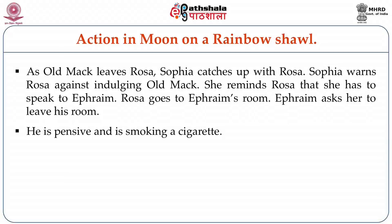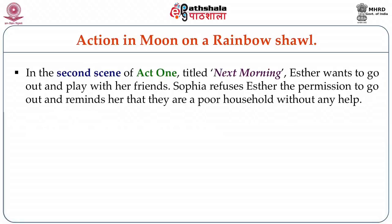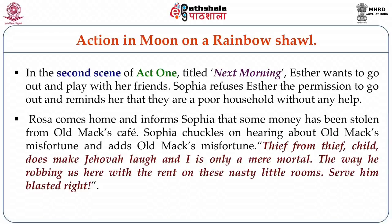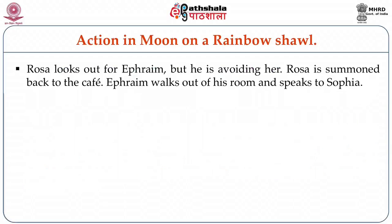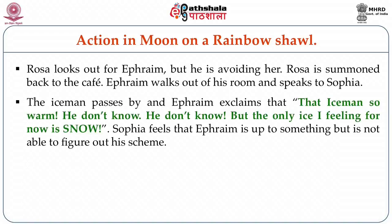In the second scene of Act 1, titled Next Morning, Esther wants to go out and play with her friends. Sophia refuses Esther permission to go out, reminding her they are a poor household without any help. Rosa comes home and informs Sophia that some money has been stolen from Old Mac's café. Sophia chuckles at Old Mac's misfortune and adds, 'Thief from thief — child does not make Jehovah laugh and I is the only mere mortal. The way he is robbing us here with the rent on these nasty little rooms, serve him blasted right.' Rosa looks out for Ephraim but he is avoiding her. Rosa is then summoned back to the café.